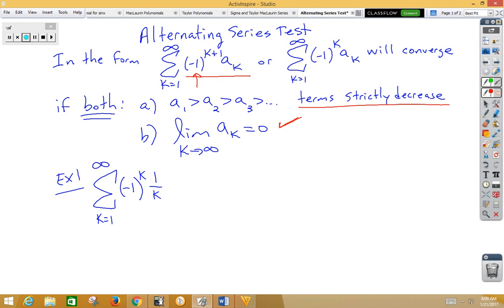This first example is actually a special case. This is the alternating harmonic. And this is one you're going to want to memorize. The alternating harmonic will converge.